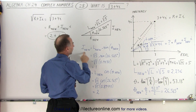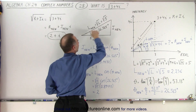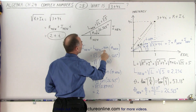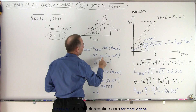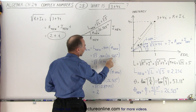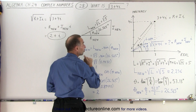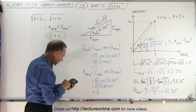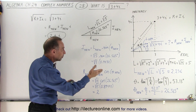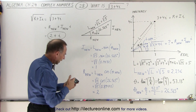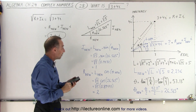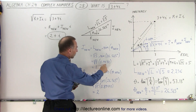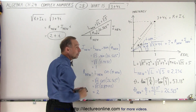To find the new imaginary part, we take the length — which is the hypotenuse of the triangle — and multiply it times the sine of the new angle, the sine of 26.565 degrees, times the new length, which is the square root of 5. So we take our calculator, divide 53.13 by 2 to get 26.565, then hit the sine button. We get a number, multiply it times the square root of 5, and we get 1.